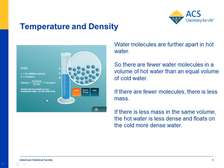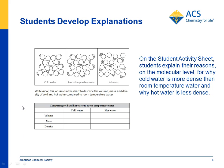That makes sense because the colder water did drop down in the room temperature water. On the student activity sheet, students have pictures of cold, room temp, and hot water, and a little chart. The idea is to write in, for cold water, whether the volume is less than room temperature or more than room temperature. For the mass, that would stay the same, so what would the density be? For hot water, is the volume more or less? Well, it's more, but the mass is the same, so then they write in the density — that would be a little less than room temperature.